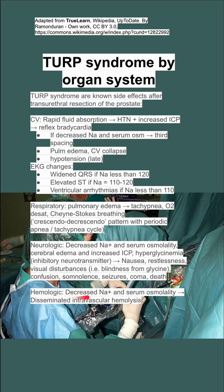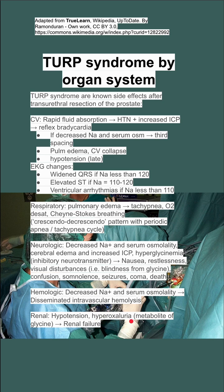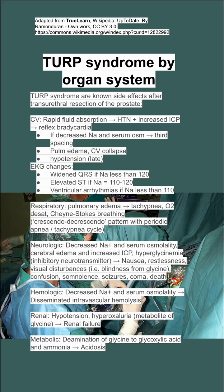Hematologic: decreased sodium and serum osms can cause disseminated intravascular hemolysis. From the renal standpoint, hyperoxaluria is a metabolite of glycine, which can lead to renal failure. And from the metabolic standpoint, glycine is broken down into glycoxylic acid and ammonia, which can cause acidosis.